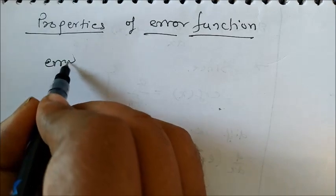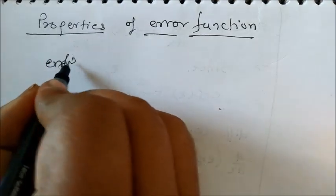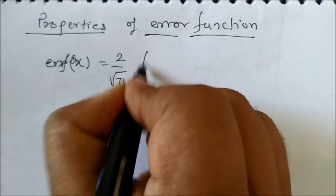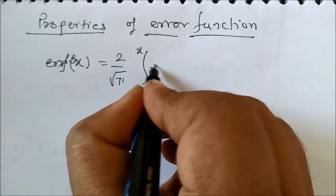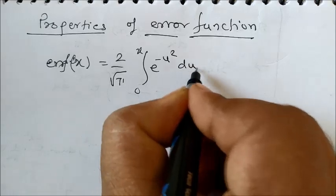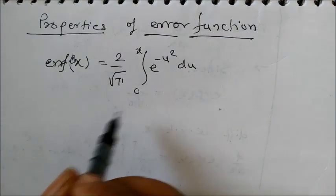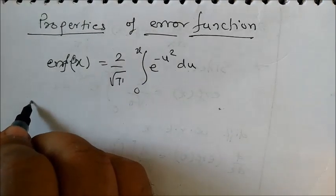So error function of x is 2 by root pi integral 0 to x e raised to minus u square du. Okay, so this is the definition we have already noted fine.